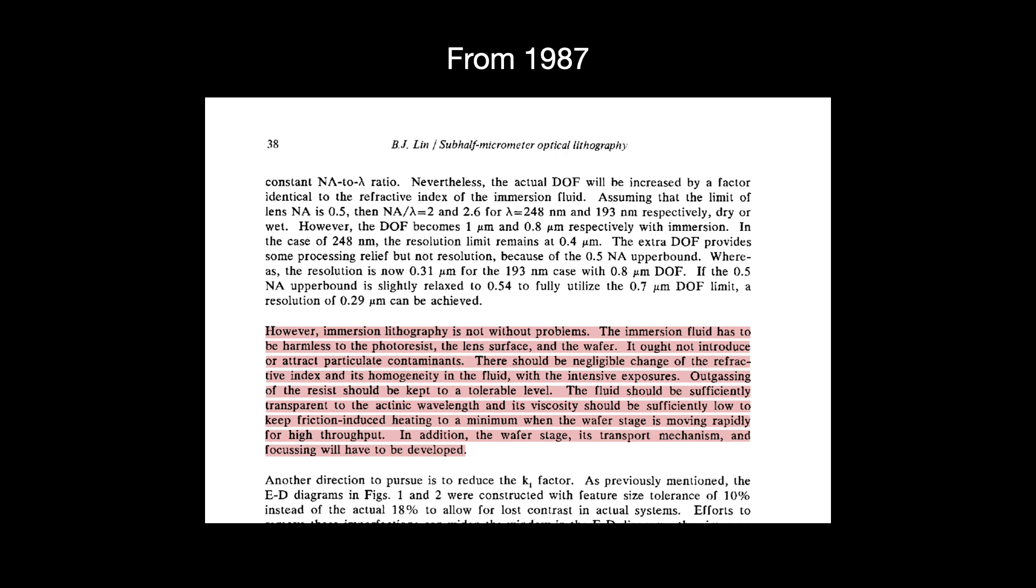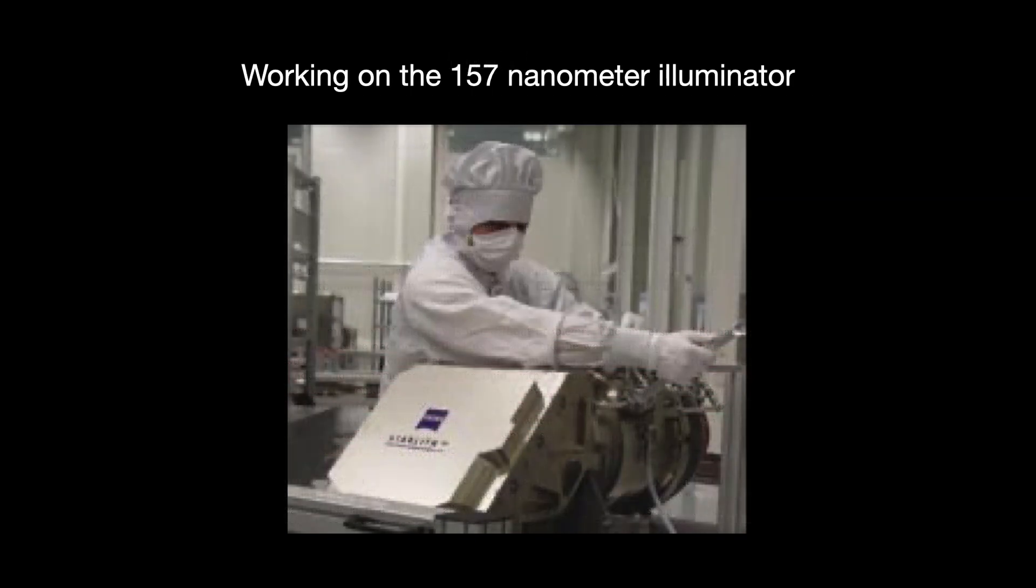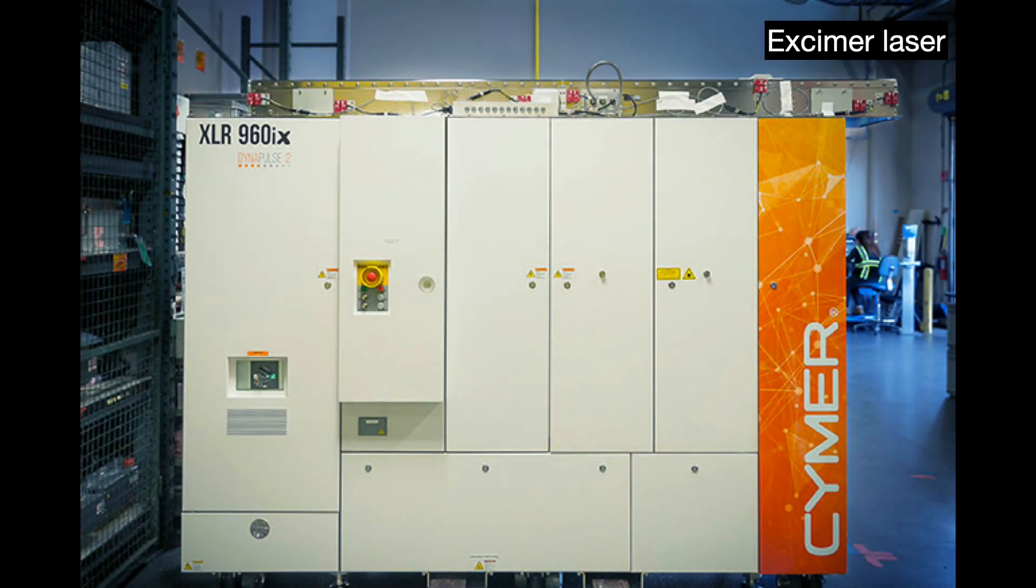Lin's remarks took a wild turn. In it, he finally spoke aloud what had been on everyone's mind. That the 157 nanometer emperor had no clothes and its technical challenges were too substantial to scale. He instead proposed that people apply immersion techniques to the already existing 193 nanometer lithography technology. It would be the first time the industry would transition from one wavelength to the same wavelength.